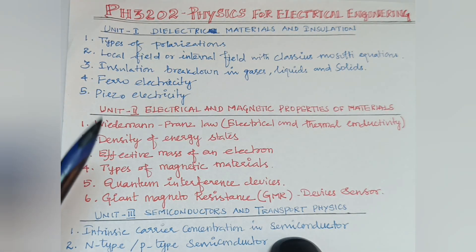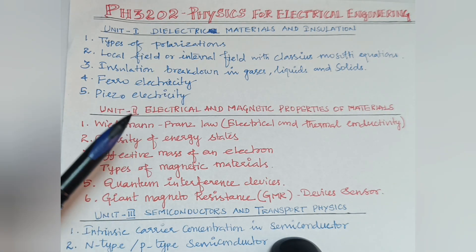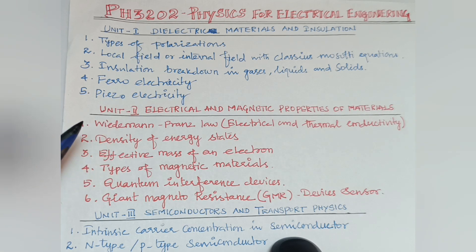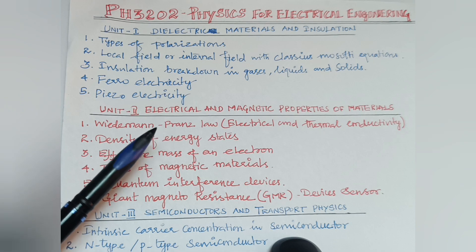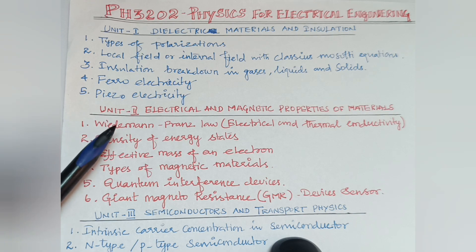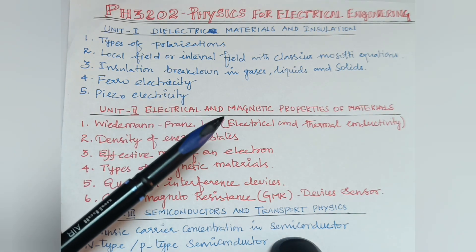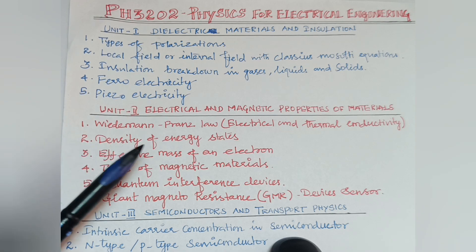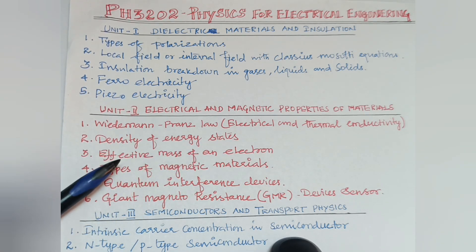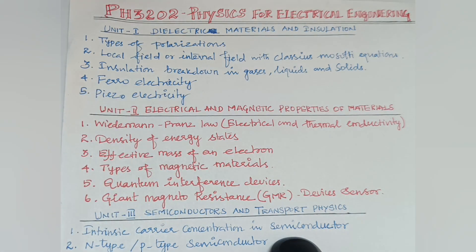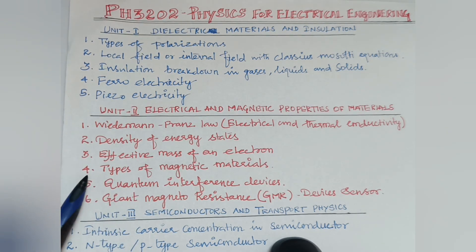The second unit is Electrical and Magnetic Properties of Materials. This is common to CSE, ECE, and ADS. The most important question is the Wiedemann-Franz Law — covering Electrical Conductivity and Thermal Conductivity. The first question is Electrical Conductivity and the fifth question is also Electrical and Thermal Conductivity.